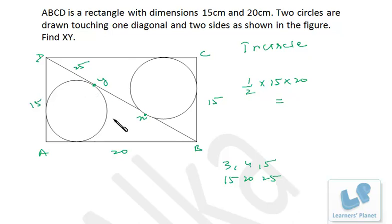Semi-perimeter is the addition of all three sides divided by 2. So 15 plus 25 that is 40 plus 20 equals 60, that means semi-perimeter will be 30. And into inradius that we have to calculate. So this is the area of the triangle.